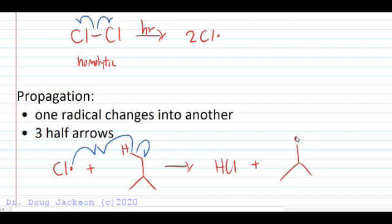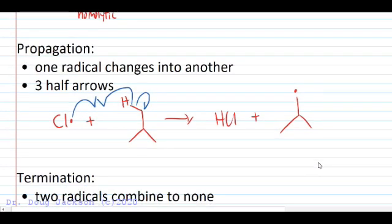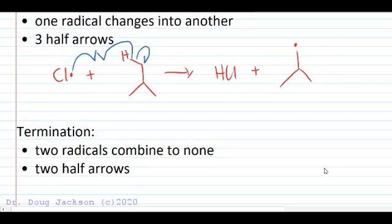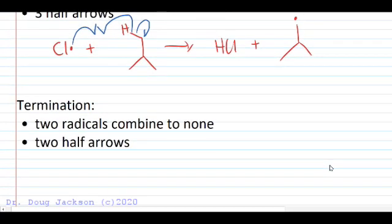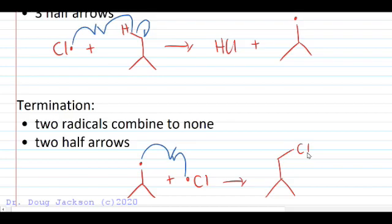All possibilities are happening. We only need to show the one that leads us toward the major product. They're all happening to some degree. And then finally, termination will show the step that leads directly to our product. That primary radical, two radicals join, two half arrows to form a new bond. Two radicals become none, and we have our major product.